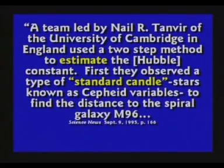I always get a kick out of that — they've got an equation which involves a number they multiply, like an algebraic equation, and they can change that number. They call it a constant, but they change it all the time. I taught algebra for years: change one value in an equation, you change the outcome. That's why they're always getting wild numbers for the age of the universe — the Hubble constant is not a constant at all.